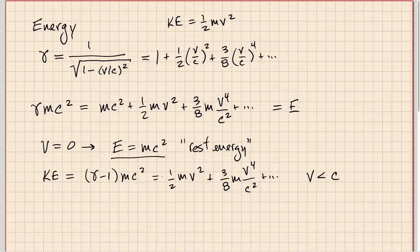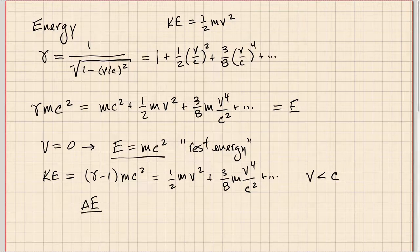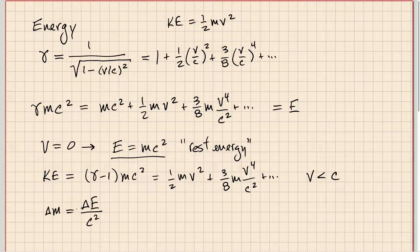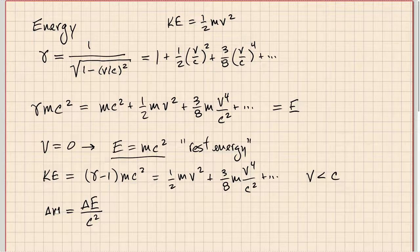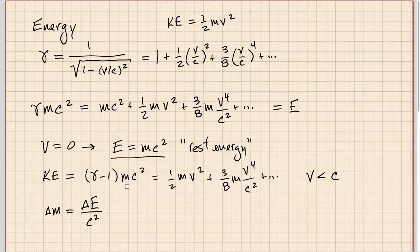As v approaches c, gamma goes to infinity, so the kinetic energy would go to infinity — therefore v must always be less than the speed of light for any particle; the speed of light is an upper limit. Going back to the rest energy idea: if there is a change in energy delta-E, then delta-E divided by c squared must equal a change in mass of the system. Since c squared is a huge number this is hard to observe, but it can be seen in nuclear reactions where the masses of constituents before and after differ by exactly delta-E over c squared.